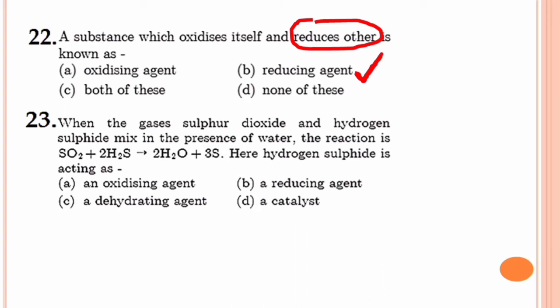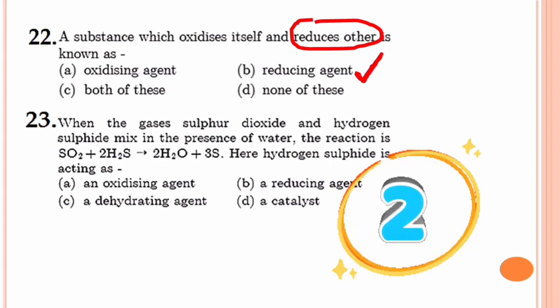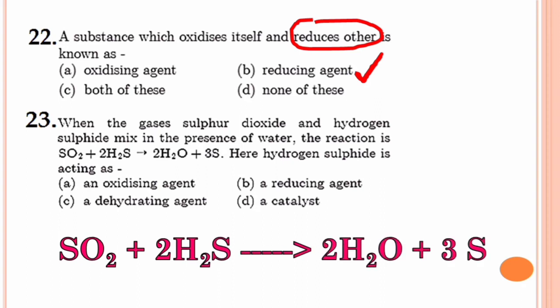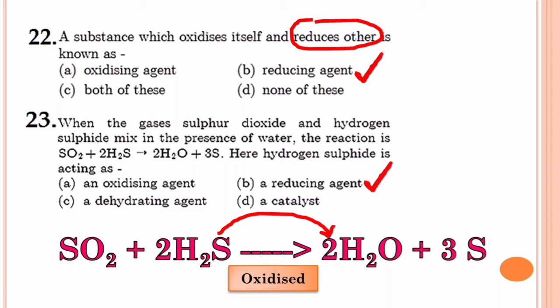Question 23. When the gases sulfur dioxide and hydrogen sulfide mix in the presence of water, the reaction is SO2 + 2H2S gives 2H2O + 3S. Here hydrogen sulfide is acting as? In H2S, hydrogen sulfide in the reactant has converted to water in the product, meaning oxygen has been added to it, so it has got oxidized. In a redox reaction, the substance that gets oxidized acts as a reducing agent. So the option is option B, reducing agent.